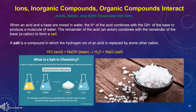When an acid and a base are mixed in water, the H+ of the acid combines with the OH- of the base to produce a molecule of water. The remainder of the acid, an anion, combines with the remainder of the base, a cation, to form a salt. A salt is a compound in which the hydrogen ion of an acid is replaced by some other cation. You don't need to know the chemical formula.